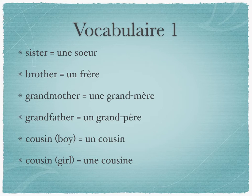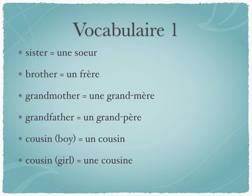Finally, we have the words for cousin — a boy cousin and a girl cousin. In French these are two separate words, unlike in English where the word cousin doesn't tell you anything about the gender of that person. We're going to see this change in two places: you're going to see the article change — un to une — and you're going to see the actual spelling of the word change.